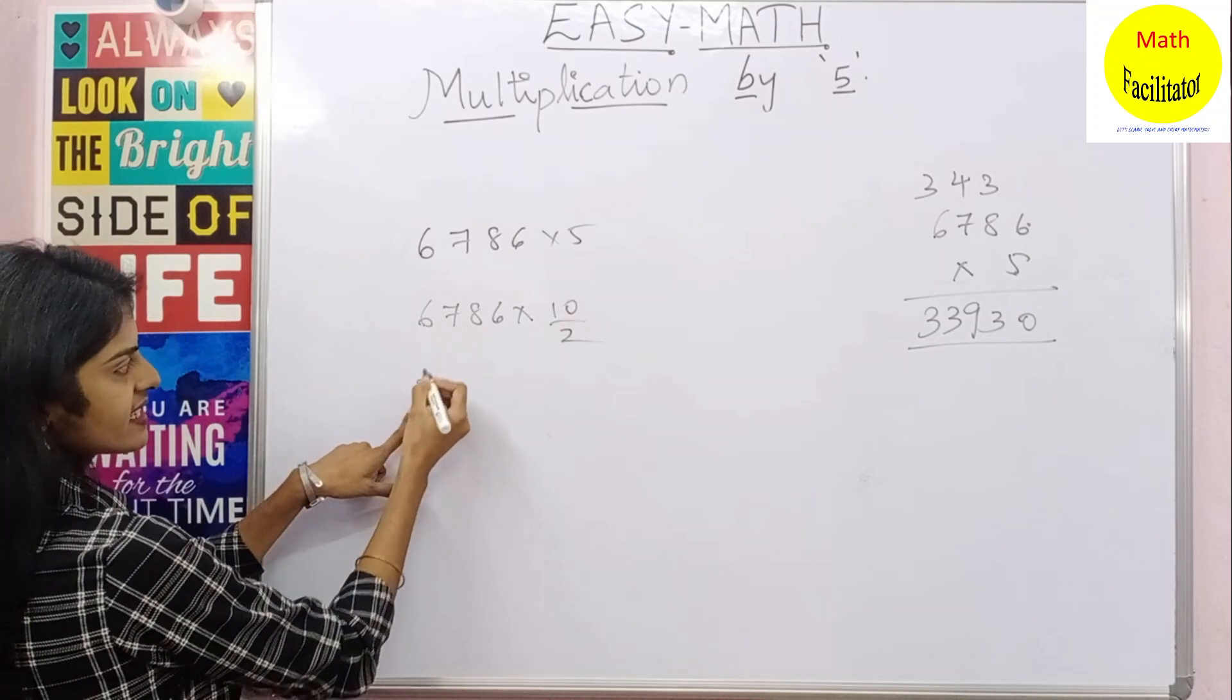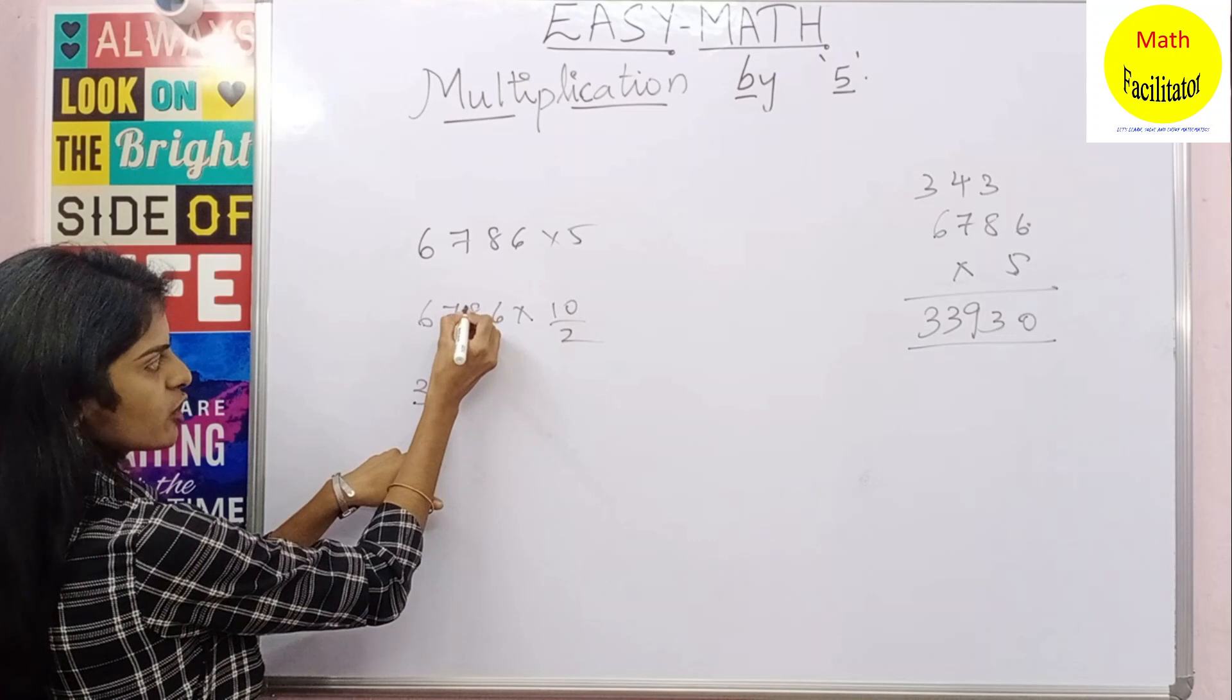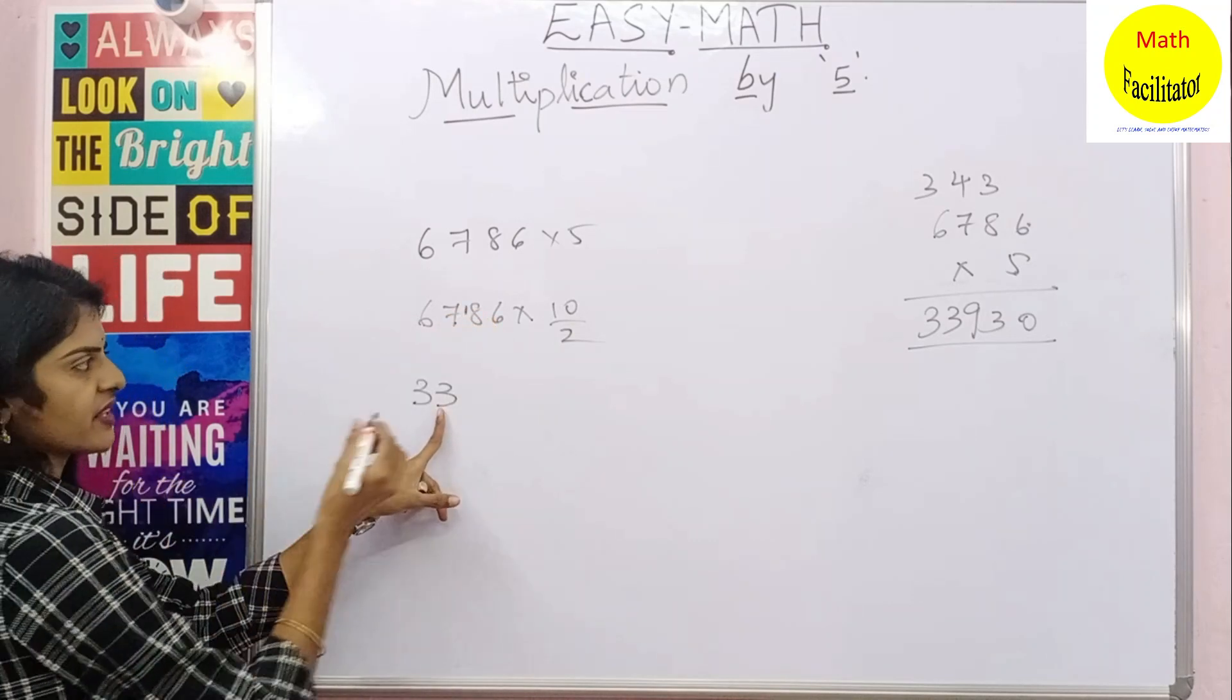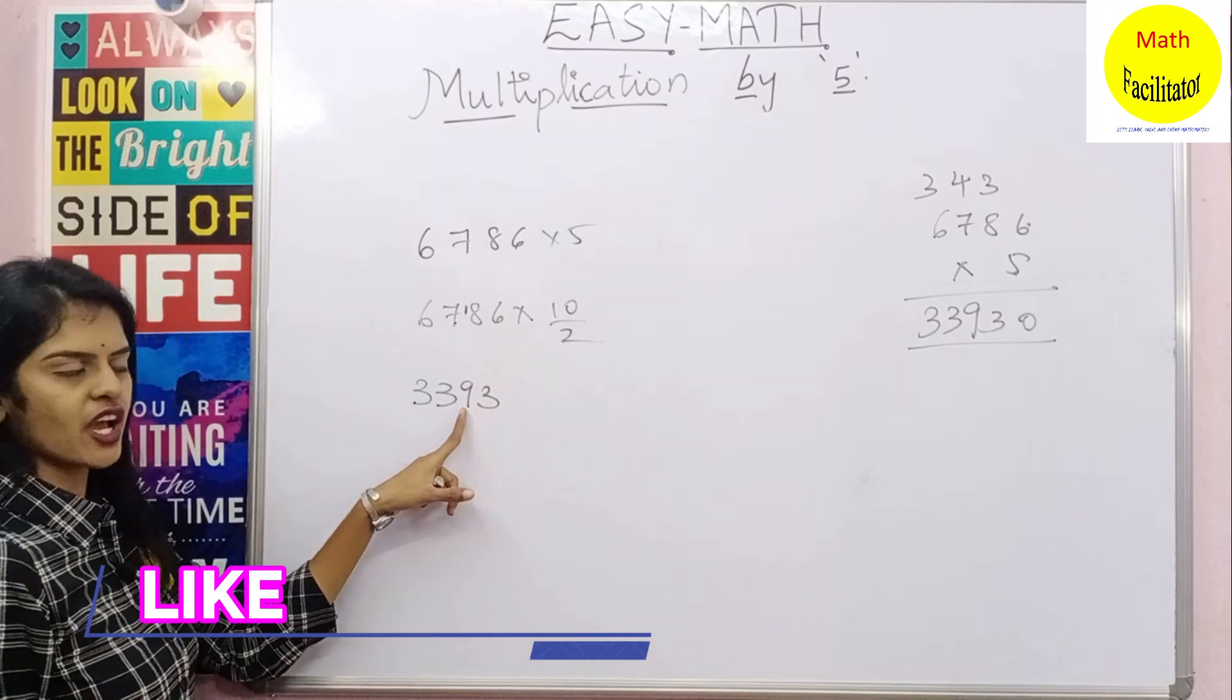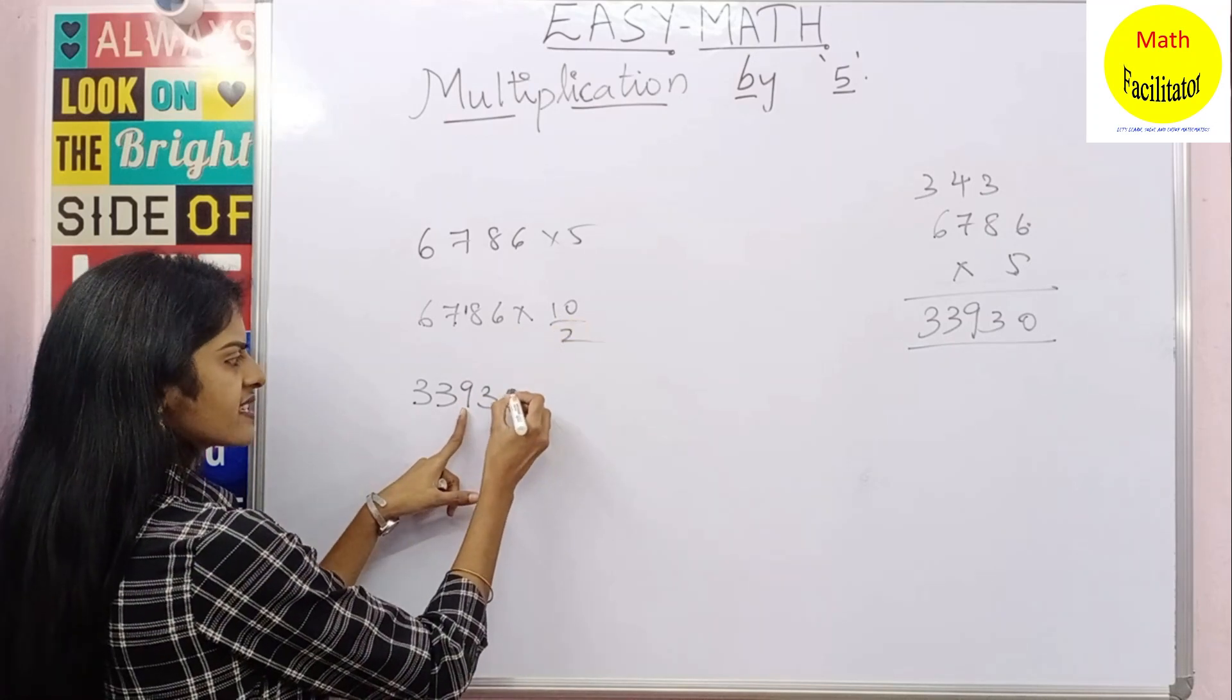2 times 3 is 6, 2 times 3 is 6, and you will be left out with 1 remainder. So 2 times 9 is 18 and 2 times 3 is 6. Into 10 is nothing but you will get a 0 at the end. So quickly you can get the answer.